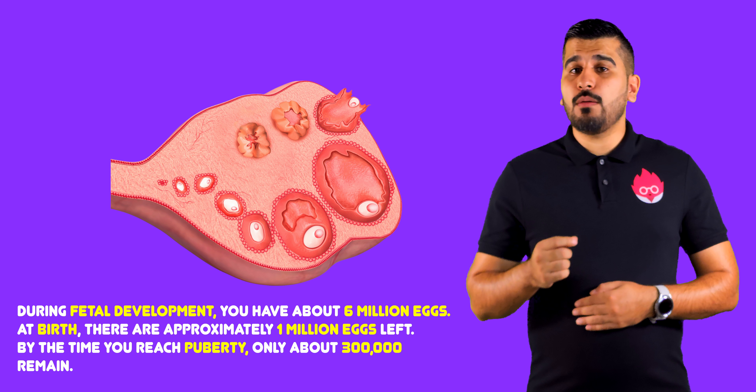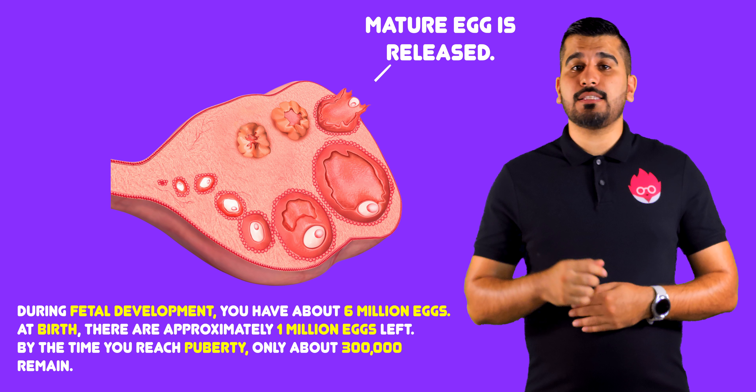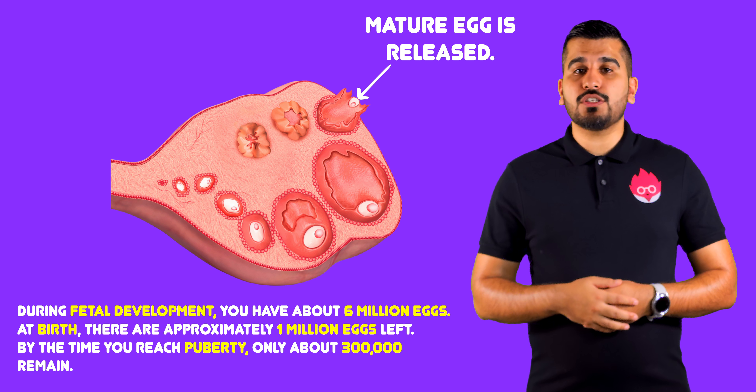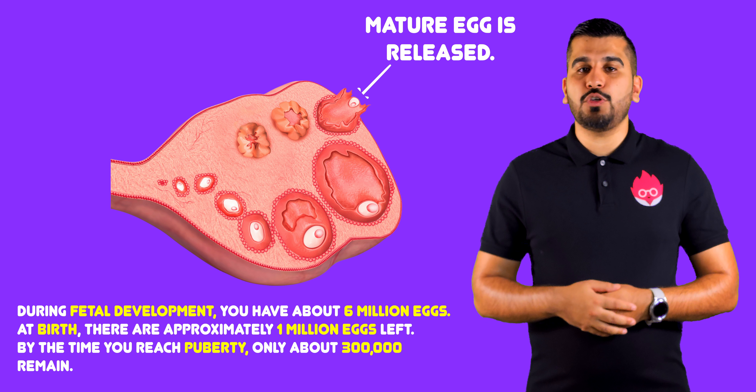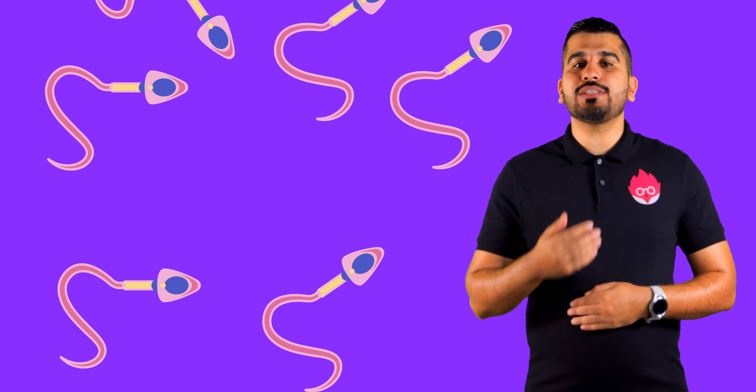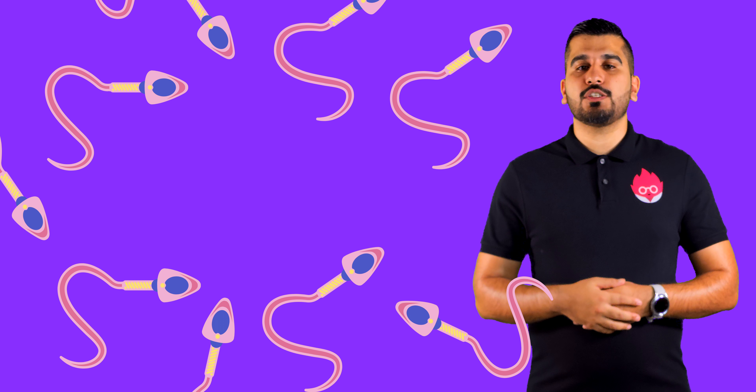Females are born with a fixed number of egg cells, which they start to release from puberty. This is different for men, who continuously produce sperm.